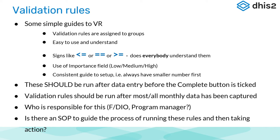Another simple guide: be consistent in how you set up validation rules. Always have the smaller number first — implement that as standard best practice, with the smaller number on the left-hand side using less than or equal to. Validation rules should be run after data entry before the complete button is ticked, and any errors identified should be corrected. They should also be run after most or all the monthly data has been captured — that would be the second, third, or fourth week of the month. Who's responsible for running these, and do you have a standard operating procedure to guide the process?